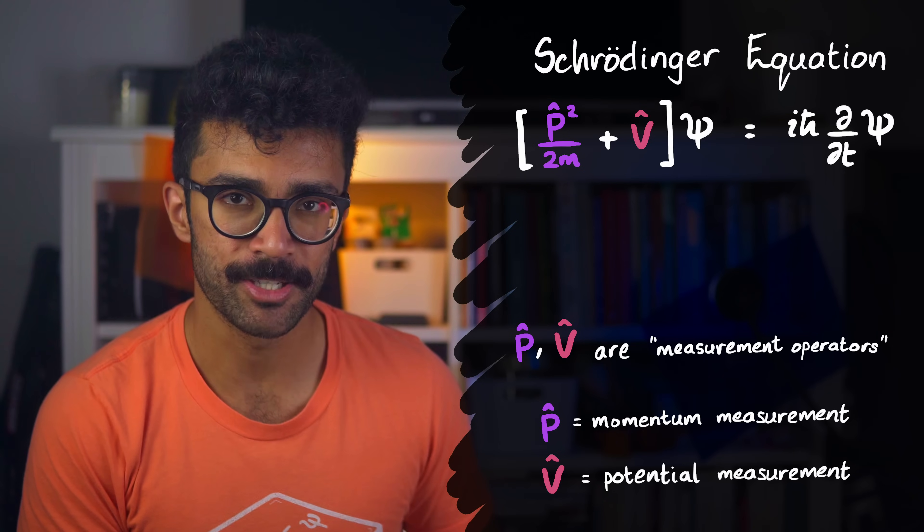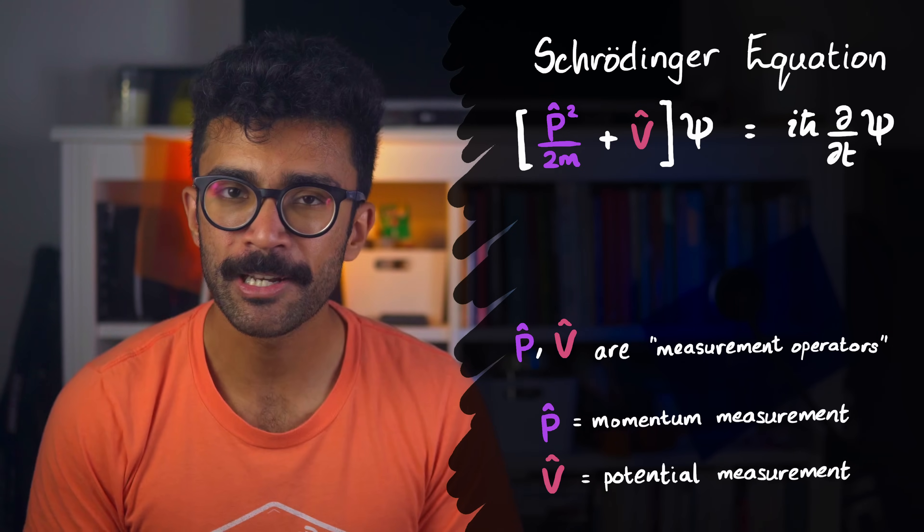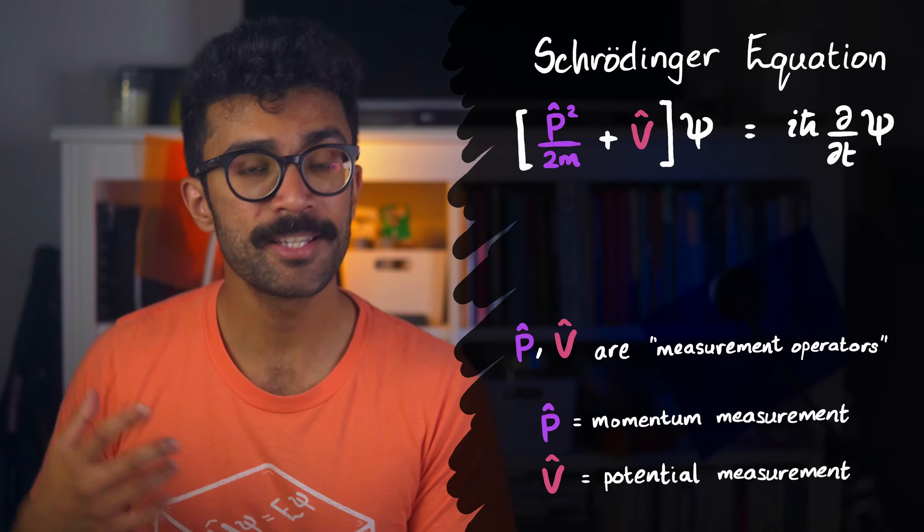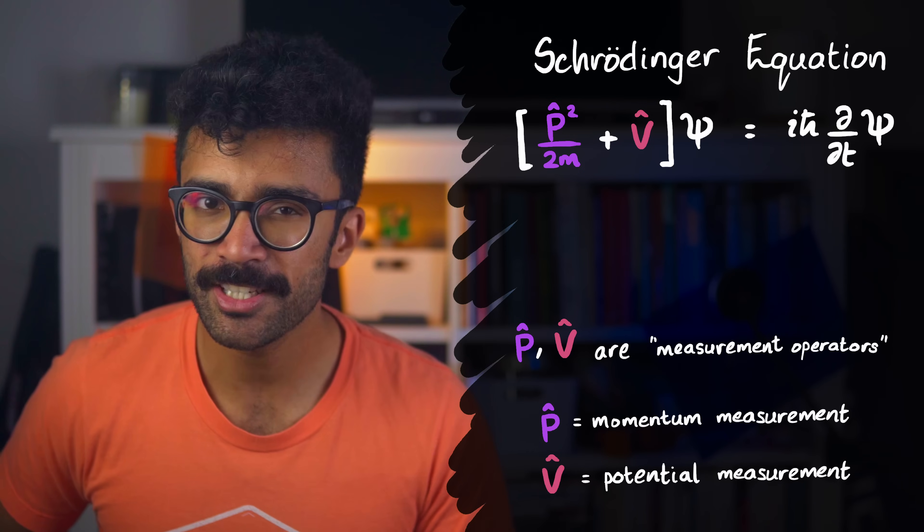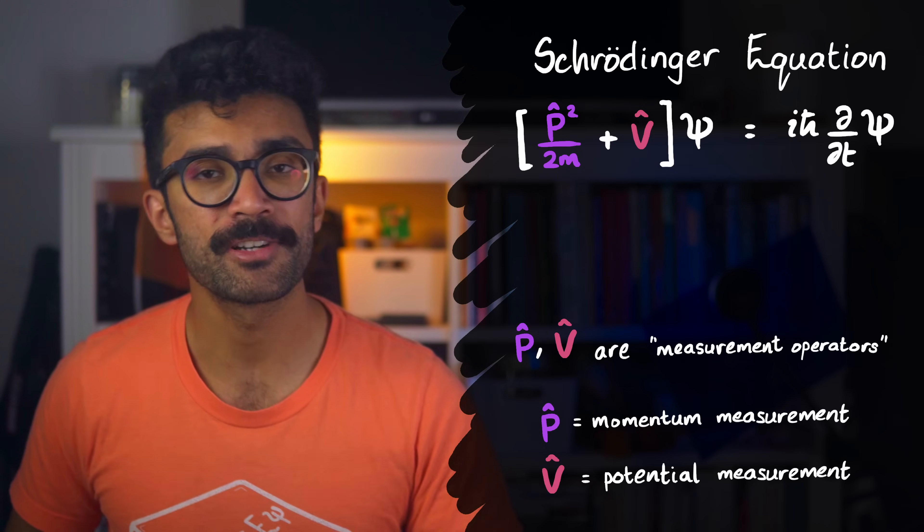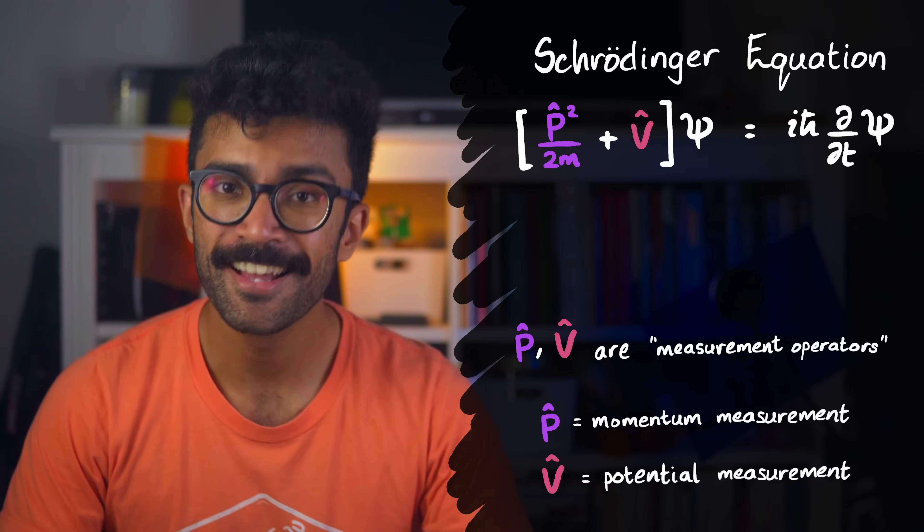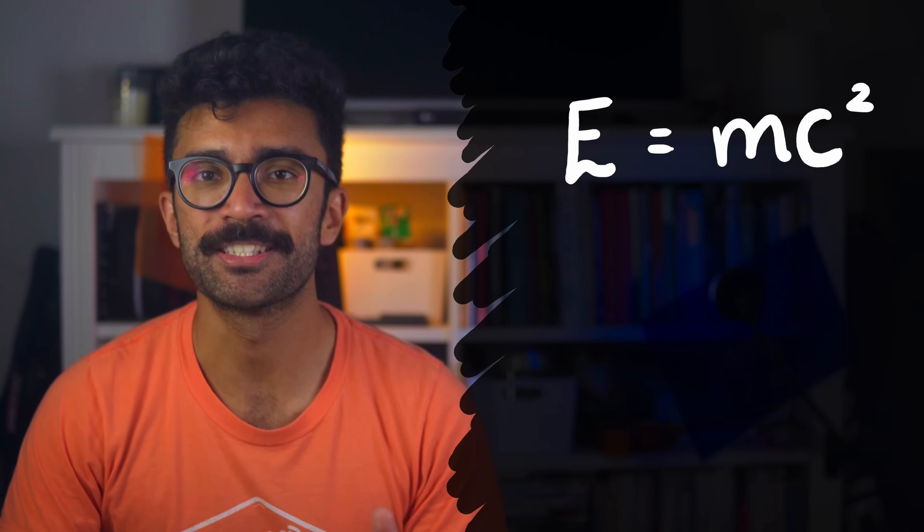So that's the Schrödinger equation, in essence. Now, if we want to include the effects of relativity into a similar sort of equation, then we actually start with Einstein's famous relationship between an object's mass and its energy. E is equal to mc squared.